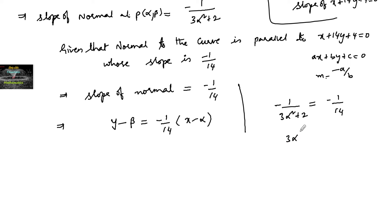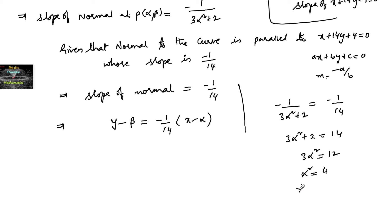Comparing both sides: 3α² + 2 = 14, so 3α² = 12, giving α² = 4, and therefore α = ±2.